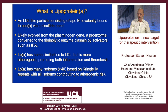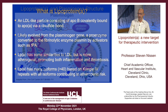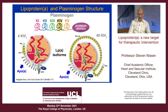Lipoprotein A has many isoforms — more than 40, based on Kringle 4 repeats — with all isoforms contributing to some extent to atherogenic risk. The core particle is the same: oxidized phospholipid and ApoB. But the ApoA component is variable, and as I will show you, that has a lot to do with the blood levels of LP little A.